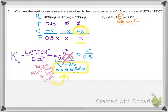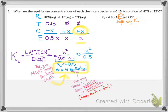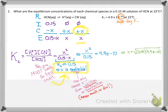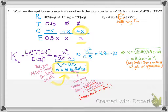Now, you might be thinking — but you didn't get rid of the x on the top. Right, I can't get rid of the x on the top because tiny numbers multiplied by each other are still really important. The x is negligible approximation only removes x from addition or subtraction. Now that we've removed x from our denominator, this problem is much easier to solve — you just multiply both sides by 0.15 and take the square root. When you solve for x, you get essentially the same value as when we used the quadratic equation.